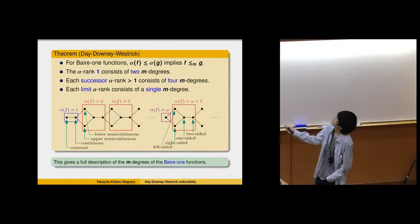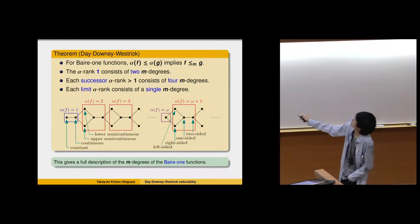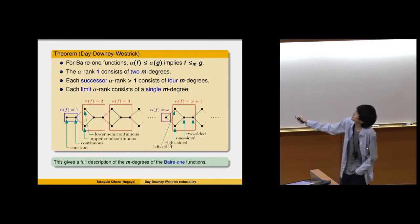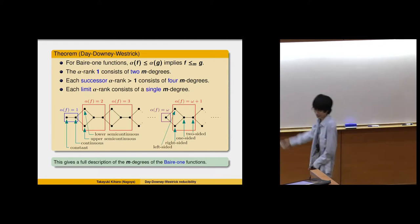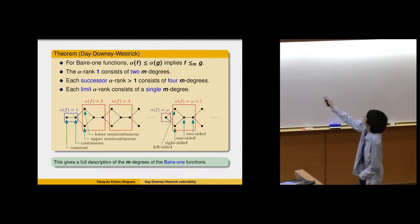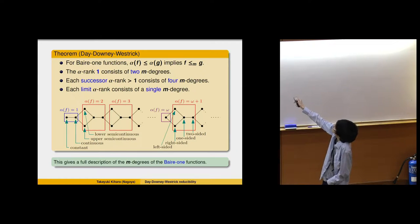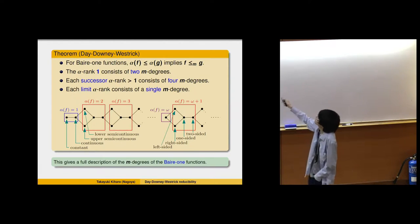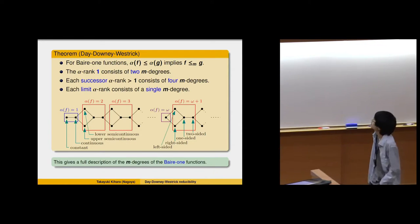Every successor rank above one consists of four M-degrees. For example, in Bruggan rank two, one part is upper semi-continuous functions, another part is lower semi-continuous functions, and there are two other degrees. Bruggan rank three also consists of four M-degrees, and so on. Each limit Bruggan rank consists of a single M-degree, and its successor level — like rank omega plus one — contains four degrees, called one-sided, two-sided, right-sided, and left-sided. This gives a full description of the M-degrees of Baire-one functions.